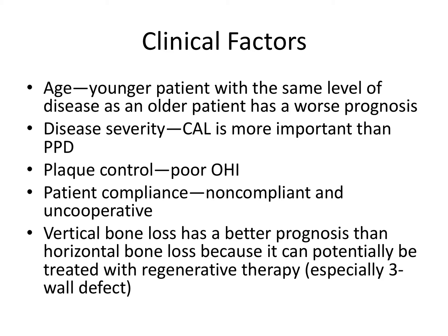A few factors are used to determine prognosis. For clinical factors, the patient's age is very important to consider. A younger patient with the same level of disease as an older patient has a worse prognosis, because starting out with periodontal disease at a younger age means more time and opportunity for the disease to get worse. Clinical attachment loss is more important than probing pocket depth, because it is based on the CEJ — a fixed point — making it a great measurement to use.